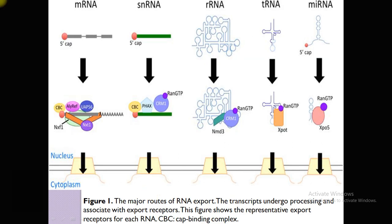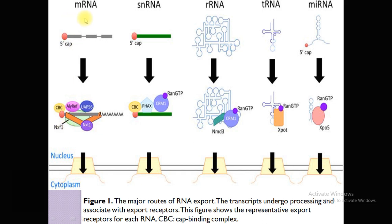As shown in this diagram, the major routes of RNA export: transcripts undergo processing and associate with export receptors. Different types of receptors are used — NXF1, CRM1 — with RanGTP attached to CRM1, and exportin-5. This figure shows representative export receptors for each RNA class, exported from nucleus to cytoplasm for translation.